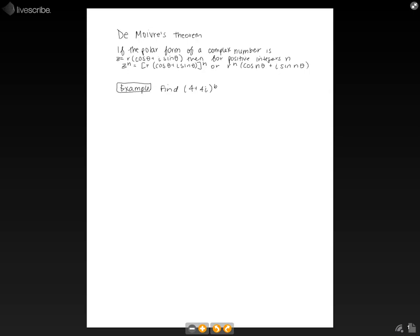In this video, we're going to talk about De Moivre's Theorem, which states: if the polar form of a complex number is z equals r times cosine theta plus i sine theta, then for positive integers n, z to the n is equal to r times cosine theta plus i sine theta all to the exponent of n, or r to the n times cosine n theta plus i sine n theta.